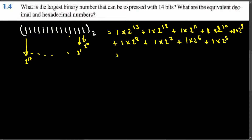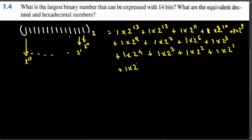Continuing: plus one times two to the fifth, plus one times two to the fourth, plus one times two to the third, plus one times two squared, plus one times two to the first, plus one times two to the zero. If you add all of them together you get 16,383 in decimal.